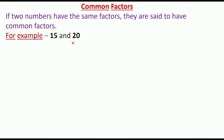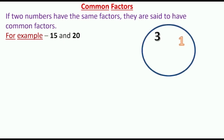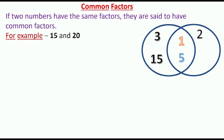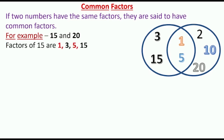What are the factors of 15 and 20? I have already taught you how to find factors of a number. The factors of 15 are 1, 3, 5, and 15. The factors of 20 are 1, 2, 5, 10, and 20.